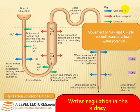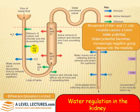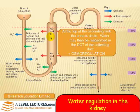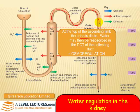Movement of sodium and chloride ions into the medulla causes a lower water potential. The water potential becomes increasingly negative going deeper into the medulla — the further you go down, the more negative it becomes, meaning it's more likely for water to be reabsorbed. At the top of the ascending limb the urine is dilute. Water may then be absorbed in the distal convoluted tubule and as it goes down into the collecting duct.